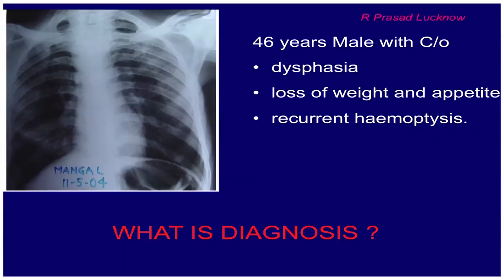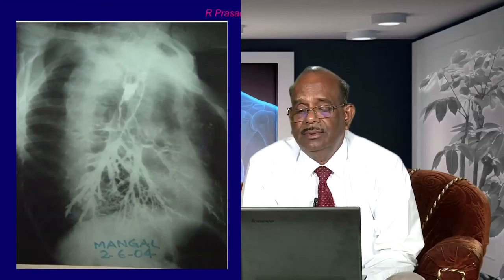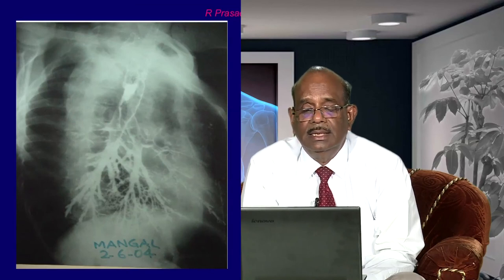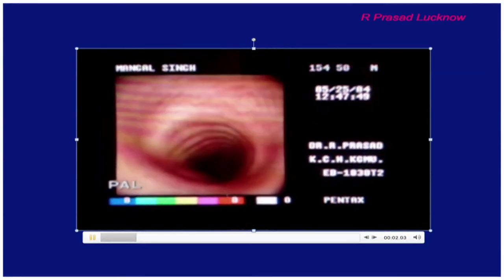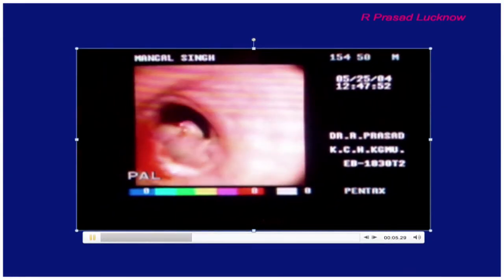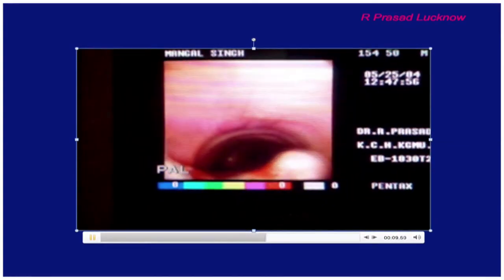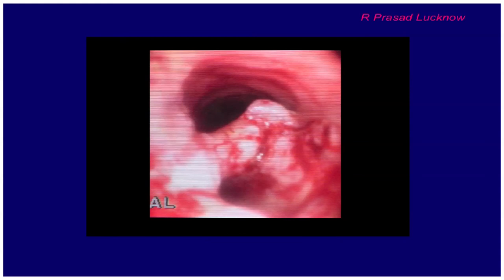This is another gentleman referred to us complaining of dysphagia, loss of weight and appetite, and recurrent hemoptysis. Because of the dysphagia, a barium swallow was done, and the whole bronchial tree was visualized — making us suspicious. We did CT thorax and OGD; CT clearly showed a gap between the trachea and esophagus. On bronchoscopy, a mass-like structure was seen with a hole into the trachea — this was tracheoesophageal fistula due to carcinoma of the esophagus. The esophagus was also investigated and growth was found there.